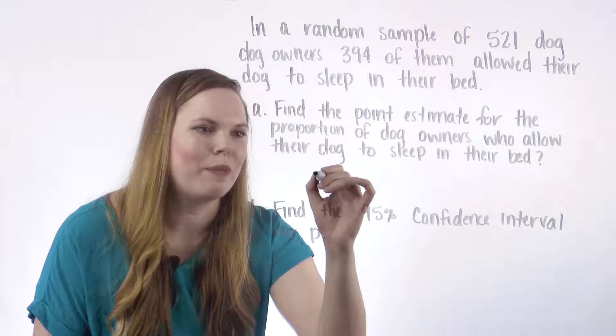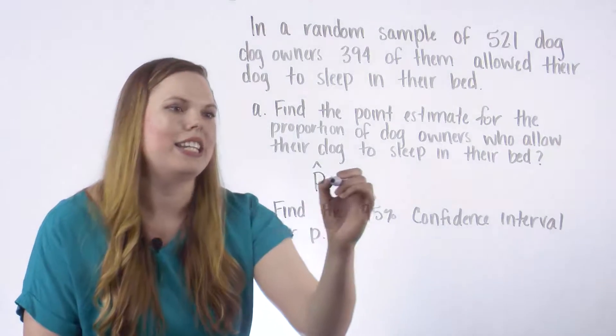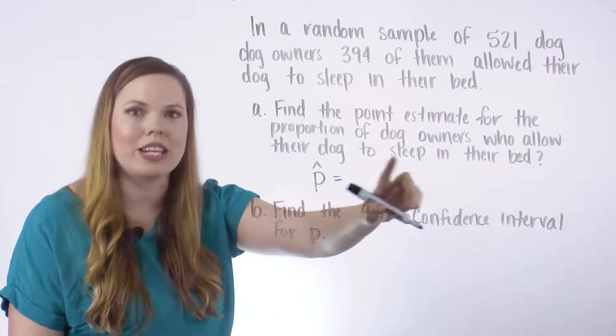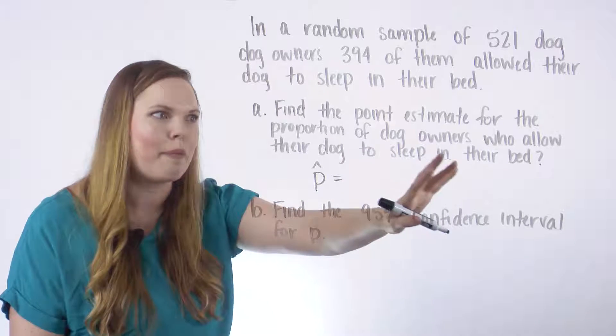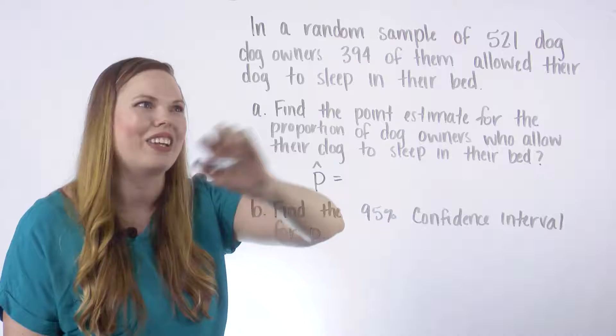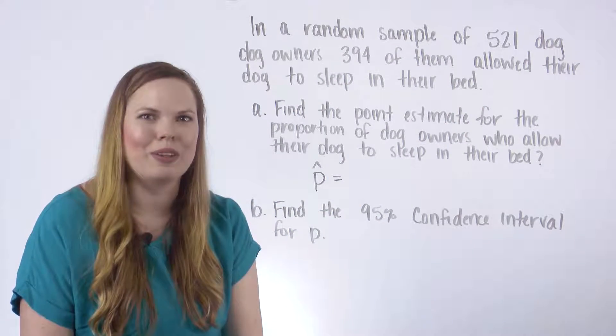We are looking for P hat which is our point estimate. P hat is going to be the number who do meet this requirement. In this case it is the number who allow their dog to sleep in their bed. So that is going to be 394 and that does match. That is the number that are allowed to sleep in the bed.